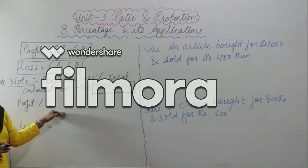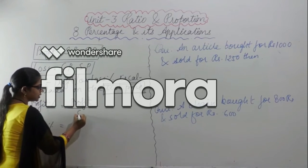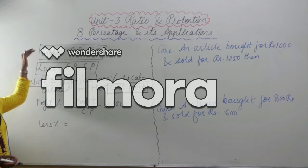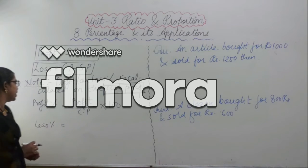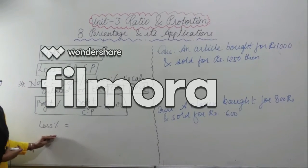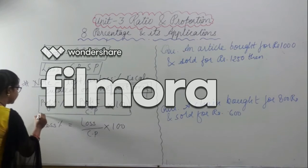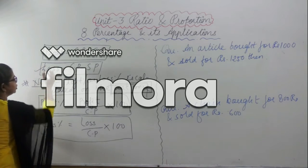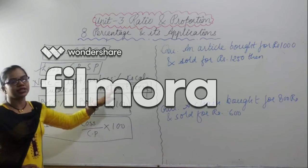The formula for profit percent is: profit divided by CP into 100. Whatever profit you have calculated, divide by cost price and multiply by 100. Similarly, loss percent is: loss divided by CP into 100. This is very important — profit or loss percent is always calculated on the cost price.